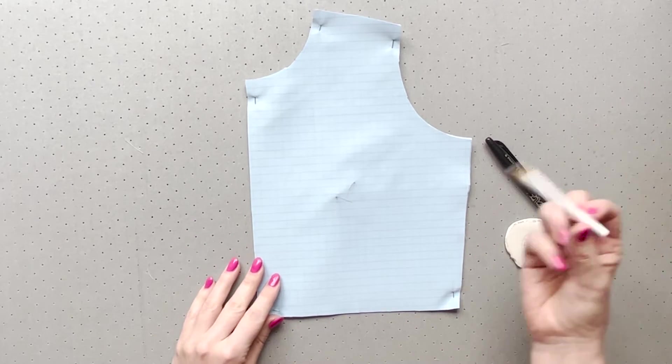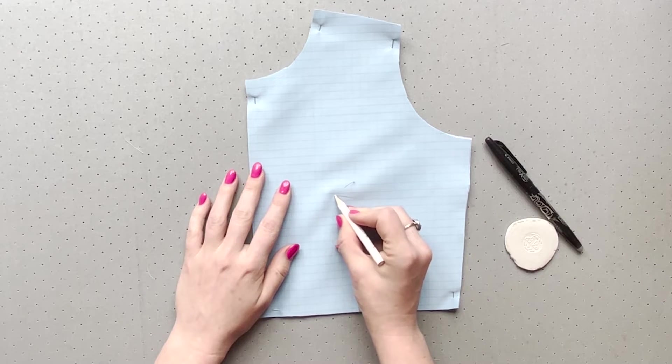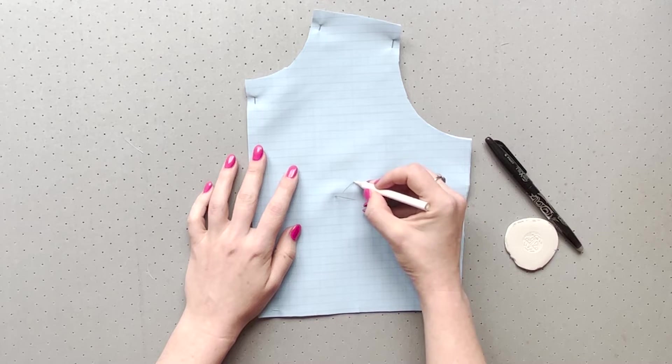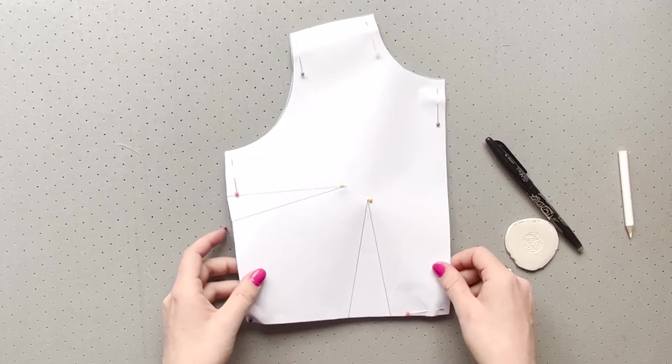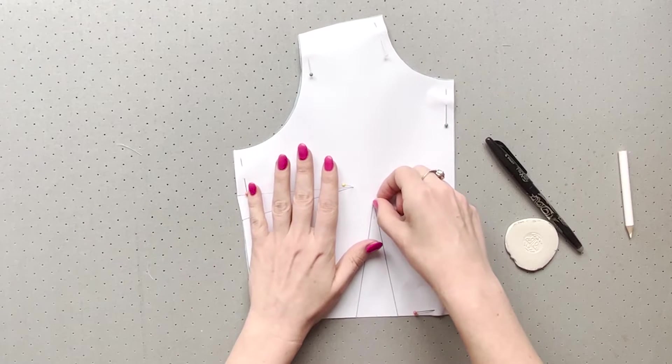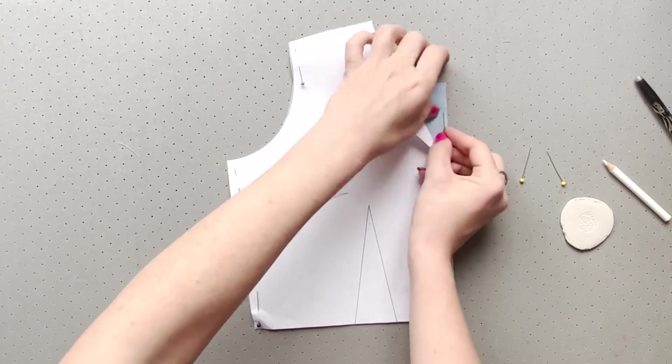You can see your pin now pointing upwards. Take your marker of choice and carefully mark where that pin is. Flip the garment back paper side up and remove your pin. Don't remove your paper till all marks are made on one side.